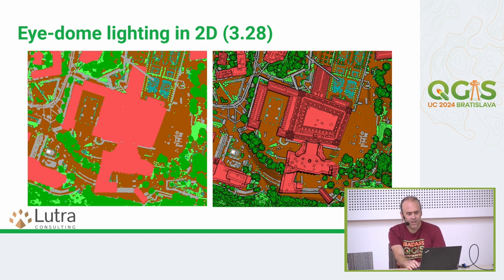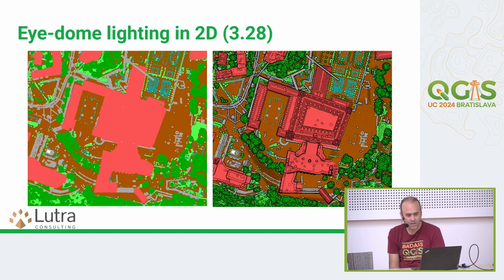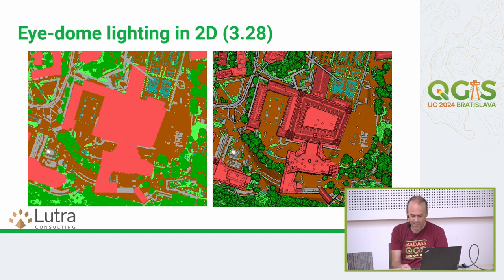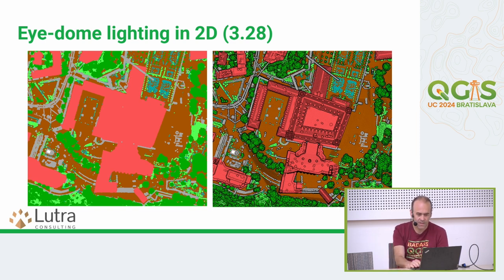In 3.28, the eye-dome lighting effect was also ported to be used in 2D views, which made rendering point clouds in 2D actually usable. Without it, you just see a sea of points without distinguishing anything. With eye-dome lighting enabled, you can actually get an idea of the slopes, the texture, the trees — everything.